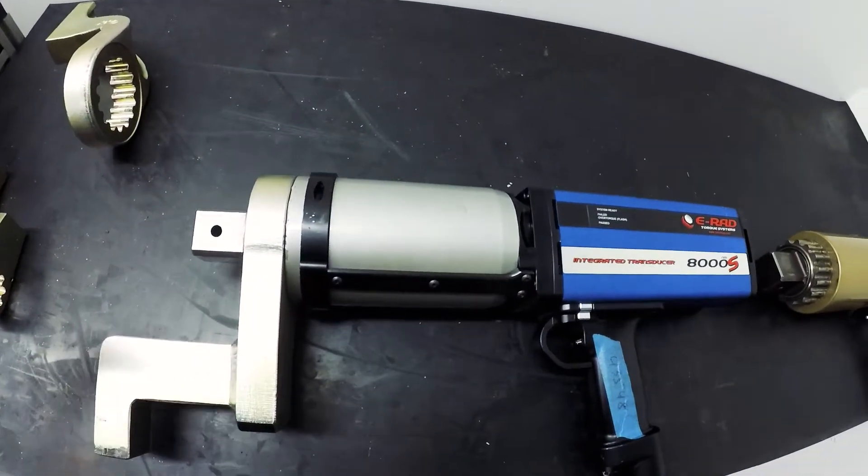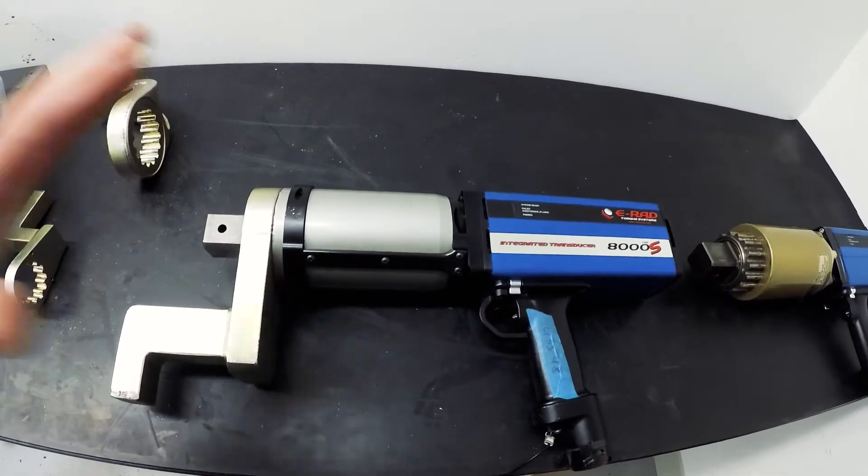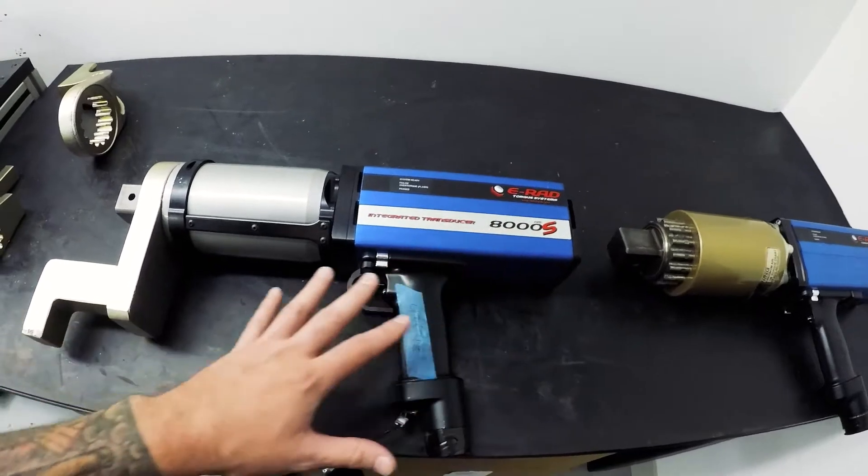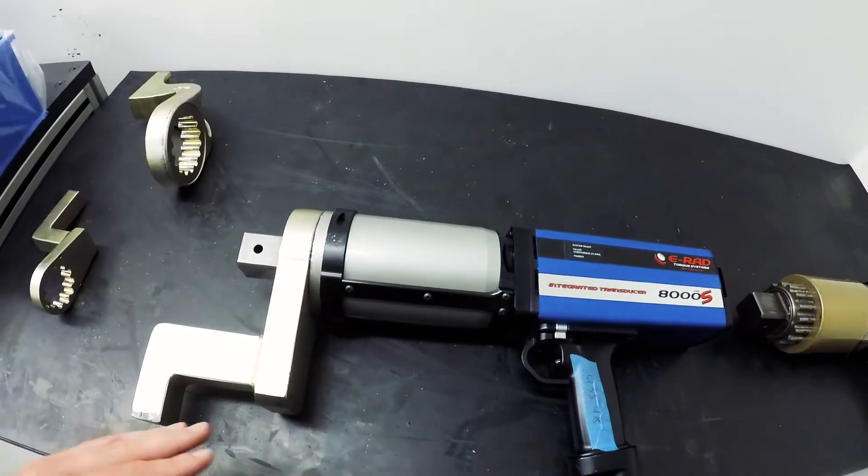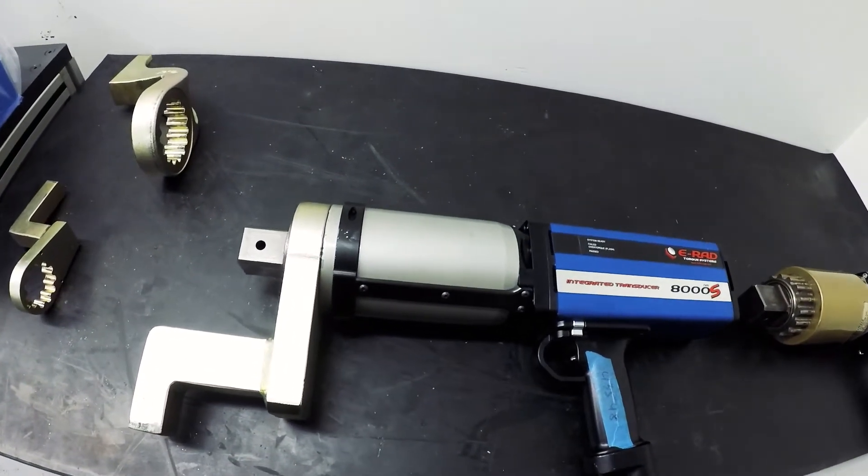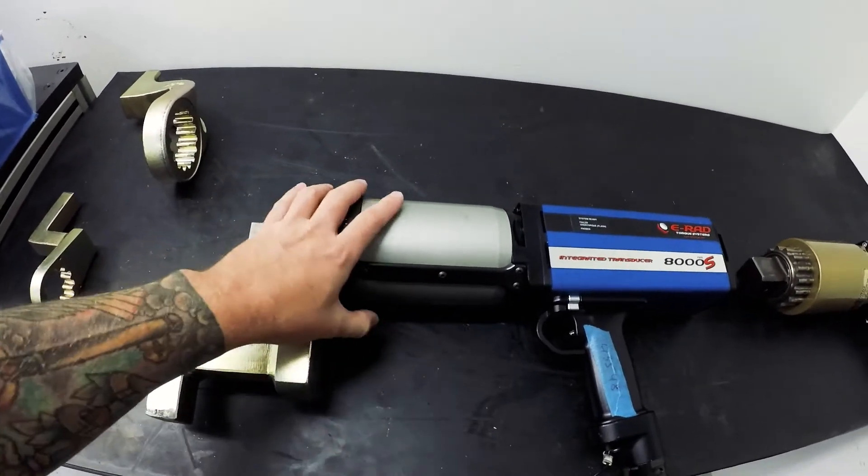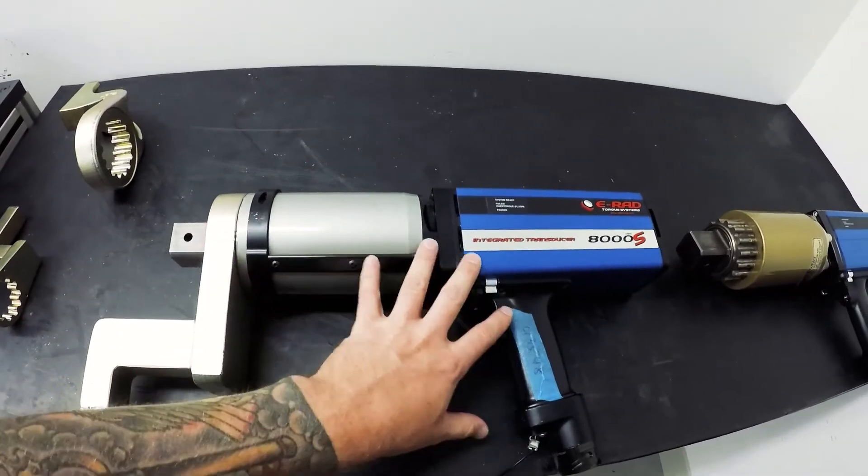So I probably butchered that up a lot, but this is what's new and coming. And so this is the E-Rad S. It takes the technology from what they already created at the electronic socket and they're putting it right into the gun itself.